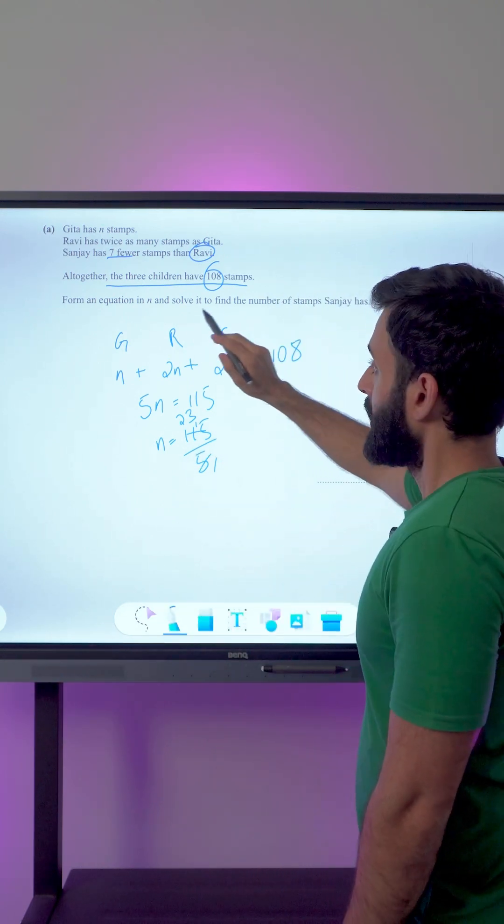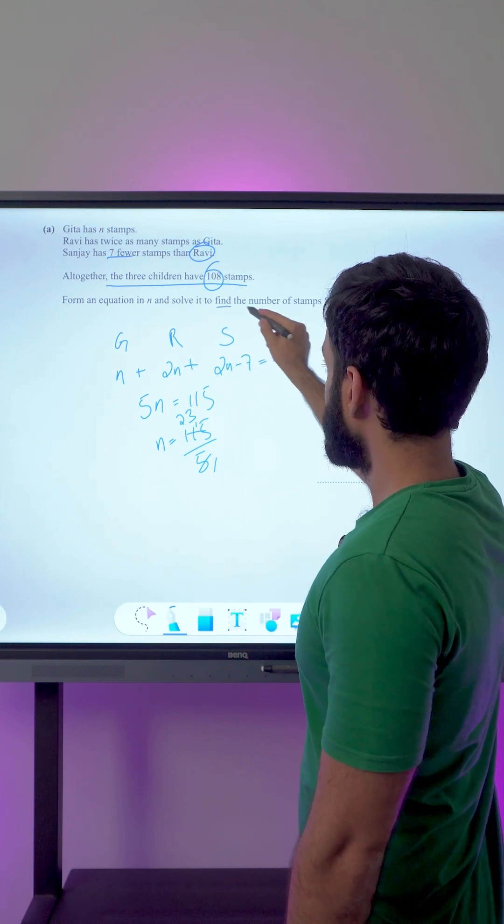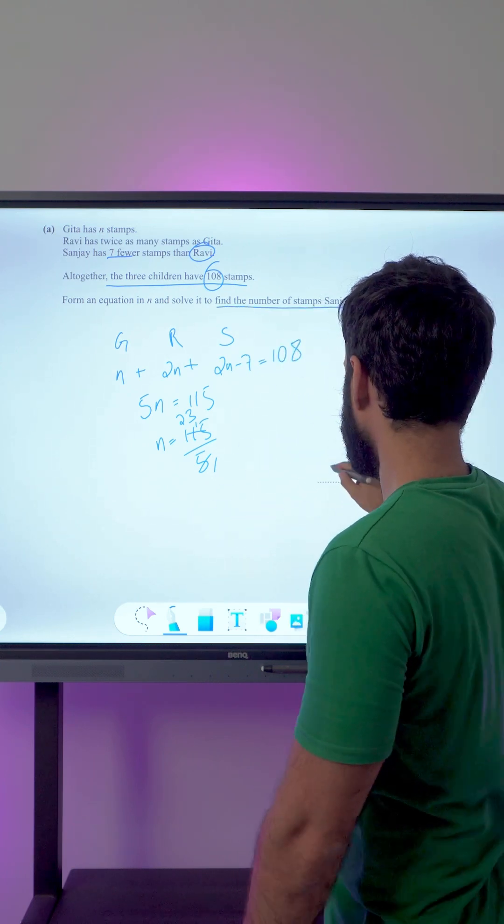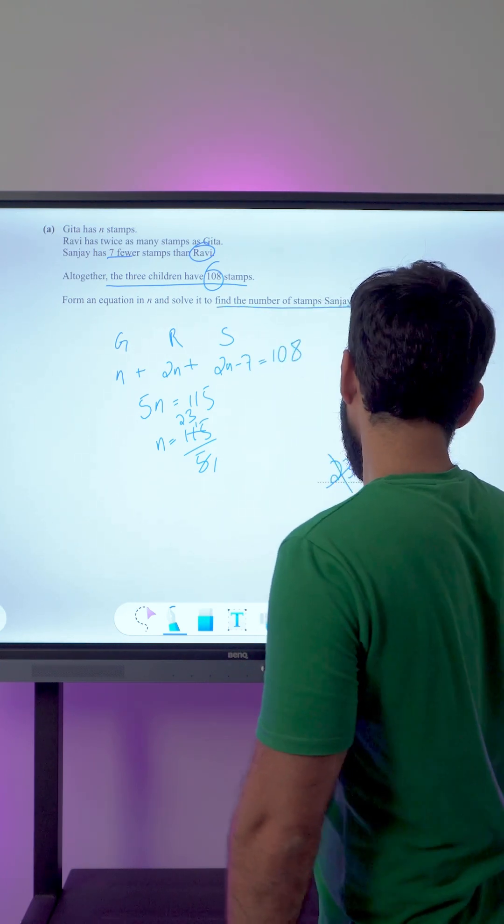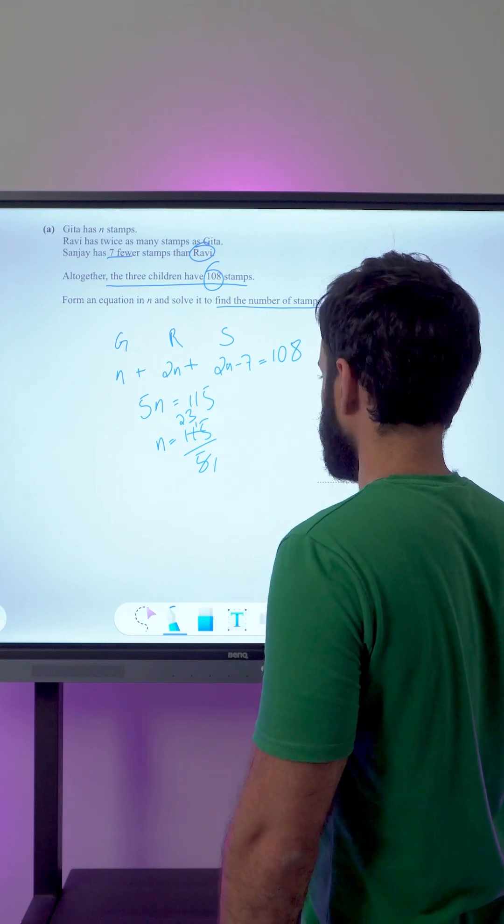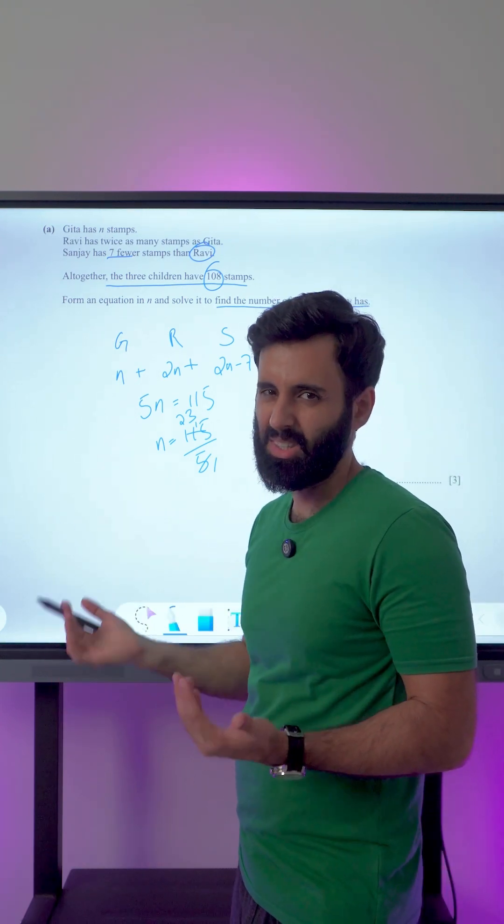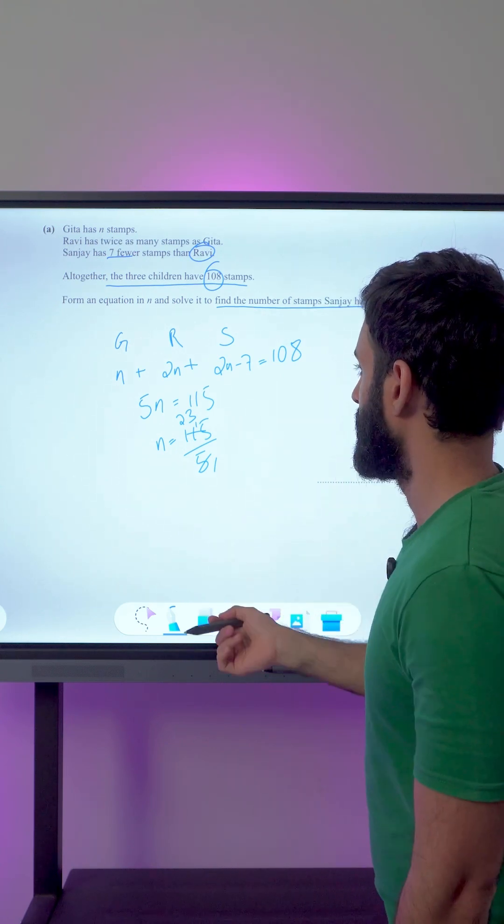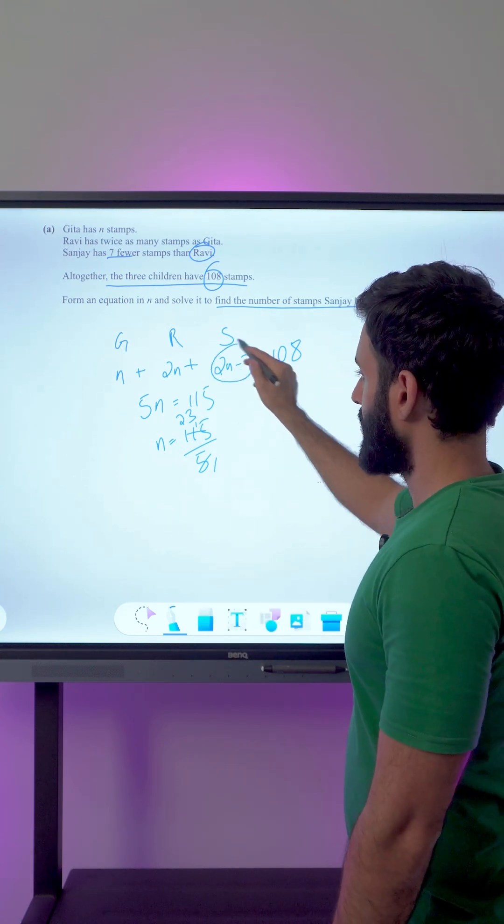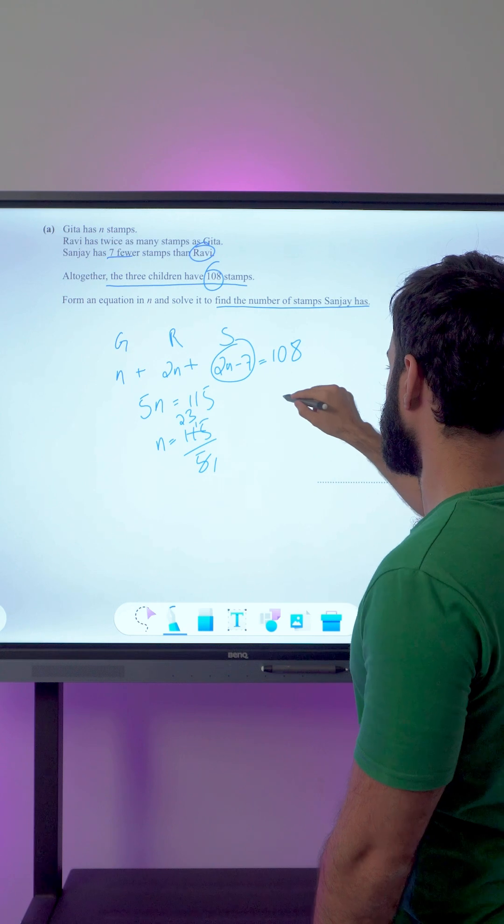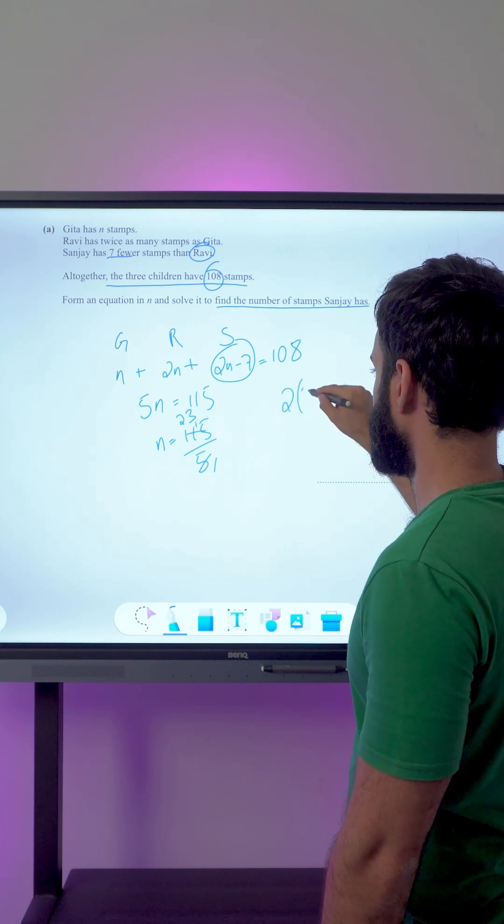The question is saying form an equation in n and solve it to find the number of stamps Sanjay has. So that means if you write 23 here, you will not get marks and you could very easily lose at least 2 easy marks. So what we want is to find out the number of stamps that Sanjay has, who basically has 2n minus 7.